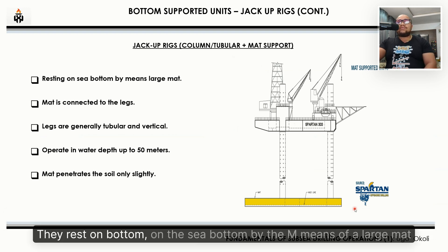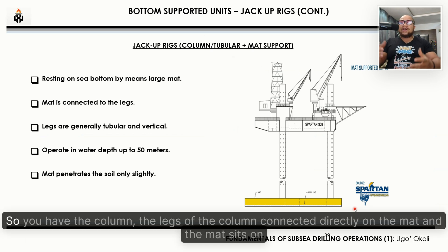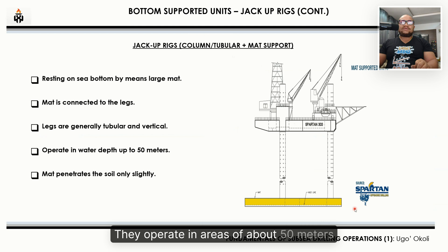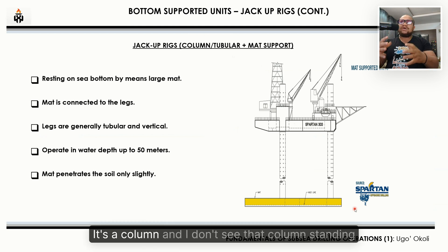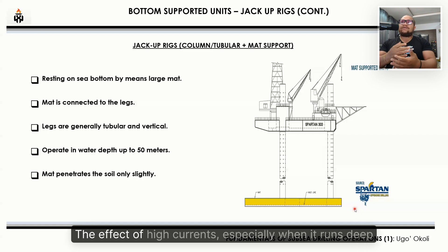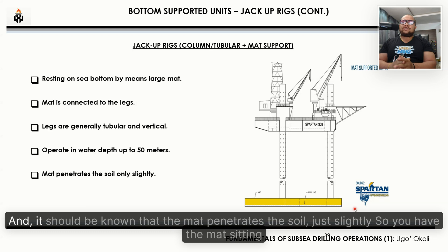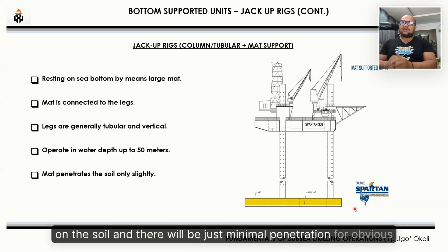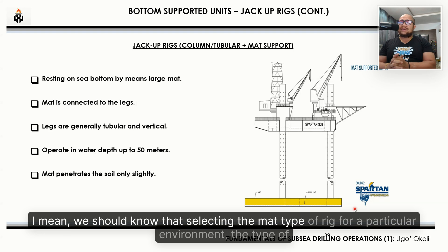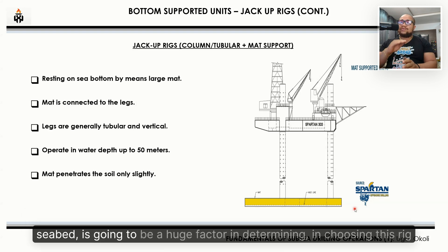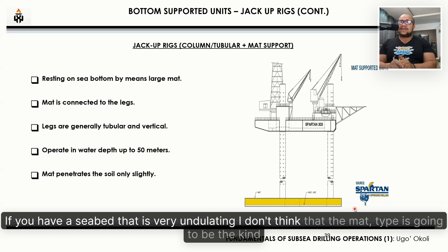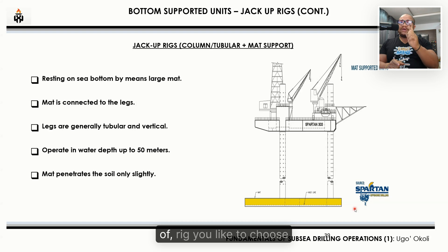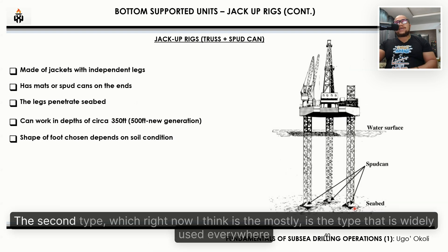The column or tubular type with mat support rests on the sea bottom by means of a large mat, with the column legs connected directly onto the mat. They operate in areas of about 50 meters — the column design doesn't handle the effects of high currents well in deeper water. The mat penetrates the soil only minimally. Selecting this type is heavily dependent on seabed conditions; for undulating seabeds, the mat type is not ideal.